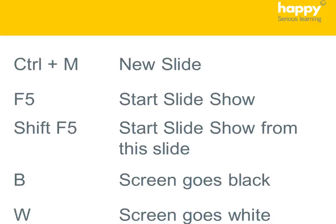So, a quick recap: Ctrl-M to create a new slide. F5 for slideshow. Shift-F5 for slideshow from the current slide. In a presentation, B will give you a black screen, and W a white screen.